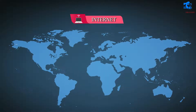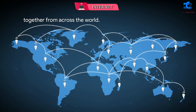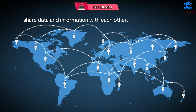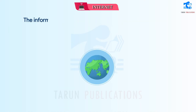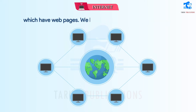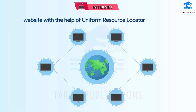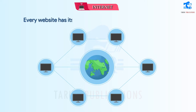Internet. The internet is the network of millions of computers joined together from across the world. This network can be used to share data and information with each other. Internet is also known as a network of networks. The information on the internet is present in the form of websites which have webpages. We can locate any website with the help of Uniform Resource Locator, URL. Every website has its own unique address which makes it easier to locate the website.